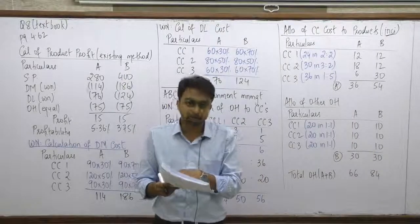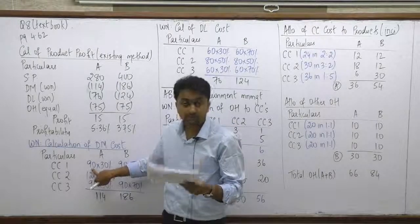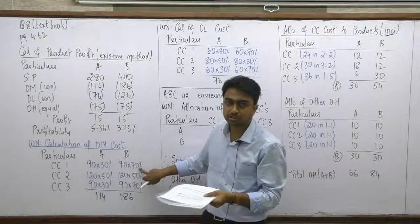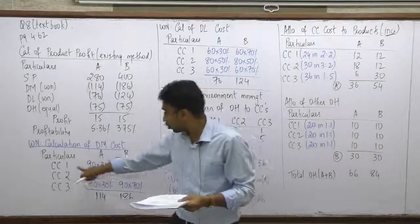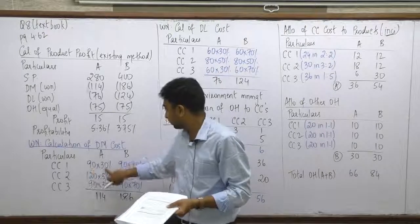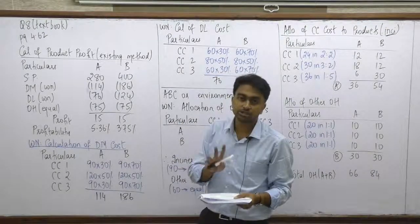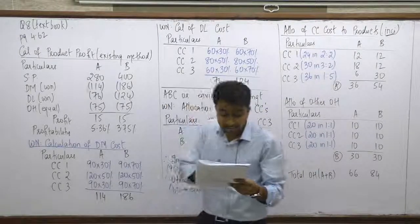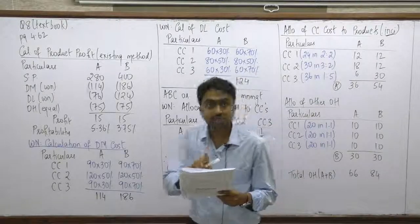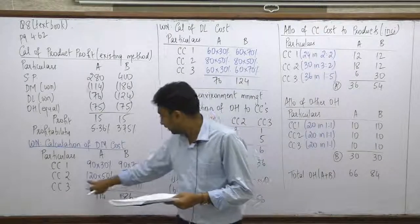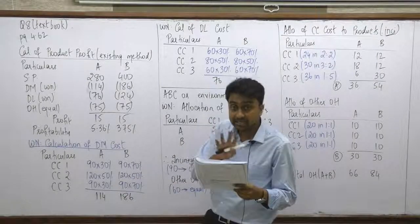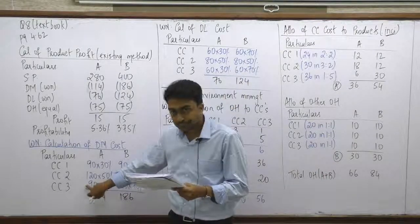So 90 × 30% goes to Grade A and 90 × 70% goes to Grade B from Cost Center 1. For Cost Center 2, the direct material cost is ₹120 and the split is 50%/50%, so 120 × 50% to each. For Cost Center 3, the direct material cost is ₹90 and the split is 30%/70%, so 90 × 30% to A and 90 × 70% to B.